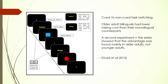A well-known study by Gohl et al. in 2013 used cued versus non-cued task switching with color patches in different shapes - sometimes sorting by shape, sometimes by color, with the stimuli remaining the same but tasks changing. They showed that bilinguals had lower mixing cost - when color and shape come together in alternation, bilinguals had far lower mixing cost compared to monolinguals. In another experiment in the same series, the advantage was found mainly in older adults but not in younger adults.